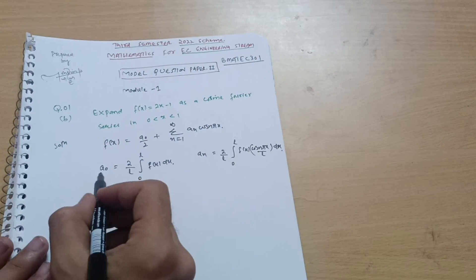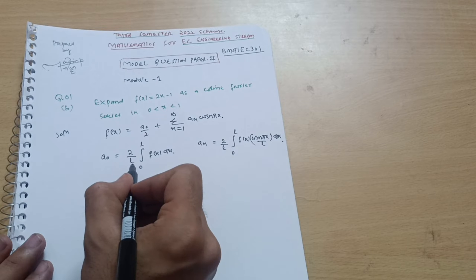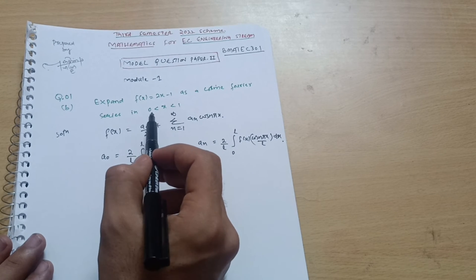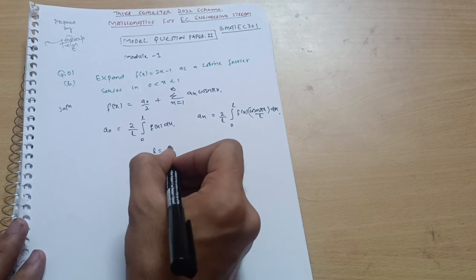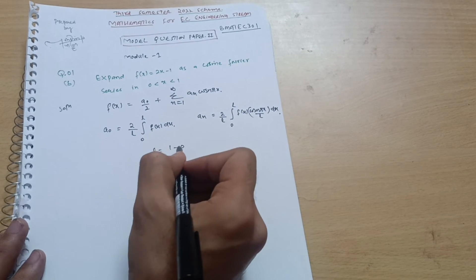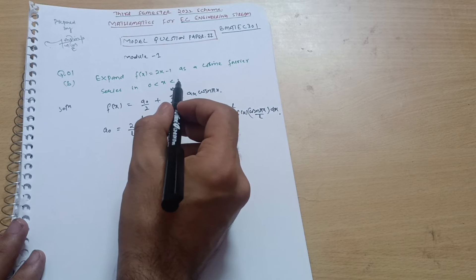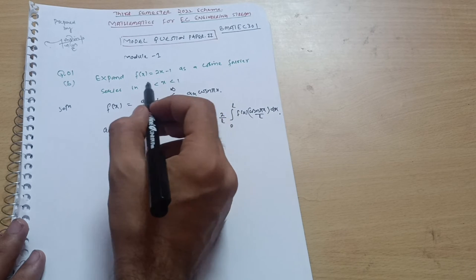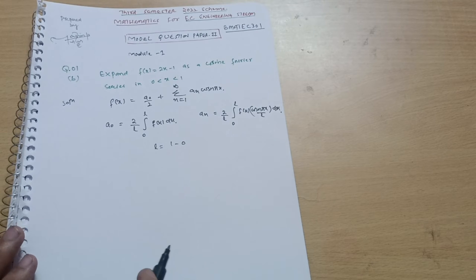First we have to calculate the l value. l is the final interval minus the initial interval, so l = 1 − 0 = 1. For example, if the interval were 0 to 3, then l = 3; if 0 to 5, then l = 5, and so on.